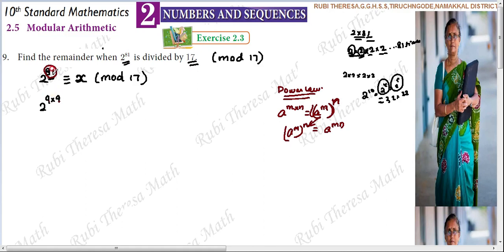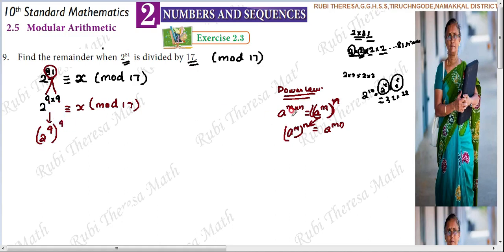81 can be split as 9 into 9. So we write 2 power 81 in a different form: as 2 power 9, the whole power 9 — applying the power law a^(m×n) = (a^m)^n. So 2 power 9, the whole power 9, is congruent to x mod 70.